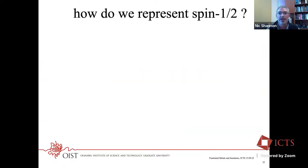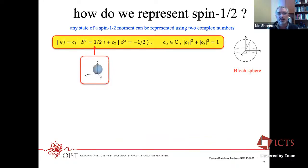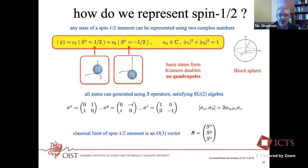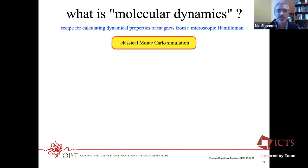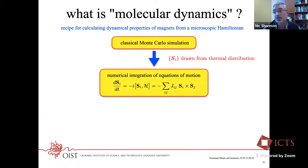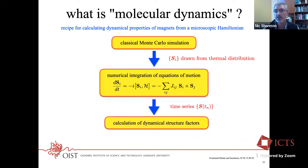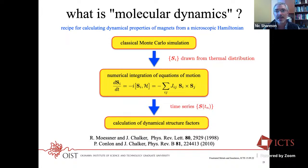We're going to the zoo now — familiar animal: spin-half. We can write any state in terms of two complex numbers, which you can also think of as a point on a Bloch sphere. Our algebra is spanned by SU(2) with the spin commutation relations, and the classical limit is an O(3) vector. To get dynamical quantities: first we do classical Monte Carlo simulation to generate a thermal distribution of O(3) vectors, then take configurations out of the ensemble and numerically integrate the dynamics on a big computer, which goes surprisingly fast. From that we can get dynamical structure factors and compare with experiment. The MD name comes from these papers by Meissner and Chalker.